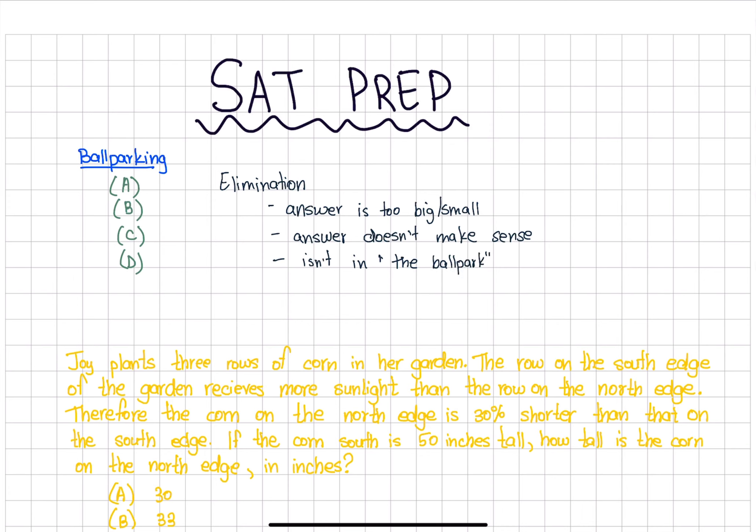So let's say A was way too big and C just didn't make sense. Now you're left with two choices, B or D. That saves you from a lot of confusion and speeds up your procedure, so you can get a quicker answer.